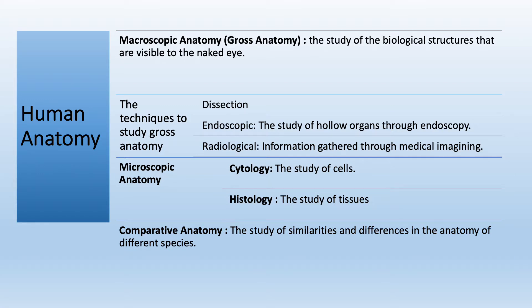Human anatomy has two divisions: macroscopic anatomy, which is also called gross anatomy — the study of biological structures that are visible to the naked eye — or microscopic anatomy, which requires you to use a tool called a microscope to study this type of anatomy.